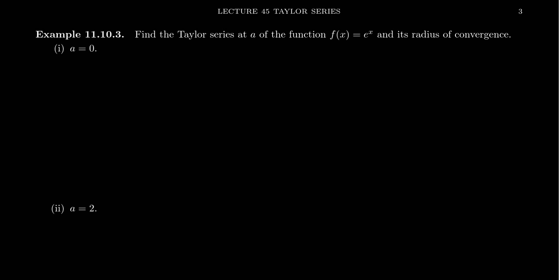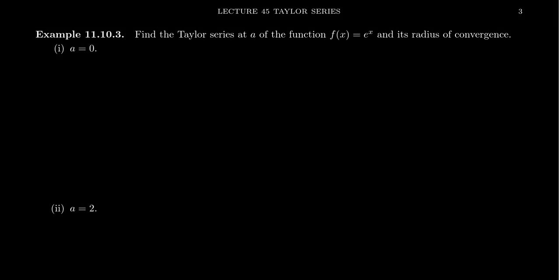In this video, we're going to find the Taylor series for the exponential function f of x equals e to the x, and we want to identify its radius of convergence. We're going to do this for two different values of a, where a is the center of the Taylor series. We'll start by looking at the Taylor series centered at zero — this is what's referred to as the Maclaurin series for e to the x, and it's an important one to remember.